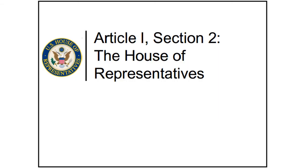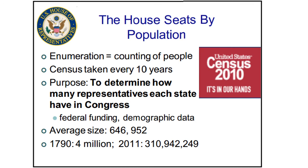Let's begin our discussion of the House of Representatives, using Article 1, Section 2 of the U.S. Constitution. The House of Representatives seats by population. So how do we figure out how many people we have in the different states? The first thing we have to do is enumerate. Enumeration is the counting of people. The United States takes a census every ten years, and the sole purpose of the census is to determine how many representatives each state has in Congress.